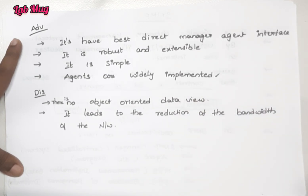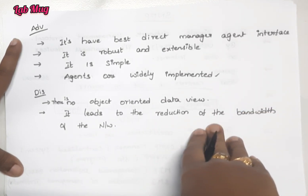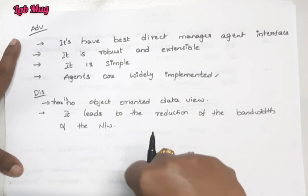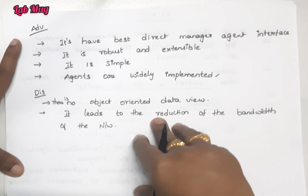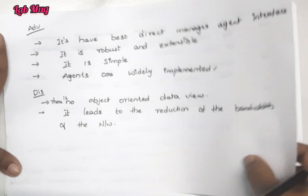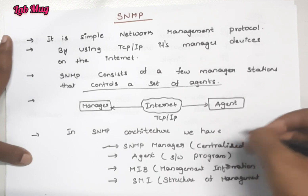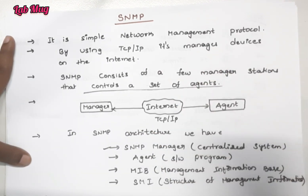Another disadvantage is that it leads to a reduction in the bandwidth of the network. So those are the disadvantages of SNMP. To summarize, we have covered the SNMP protocol - its definition, its three architectures (SNMP Manager, SNMP Agent, MIB/SMI), and its advantages and disadvantages.